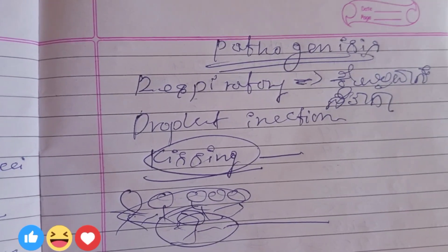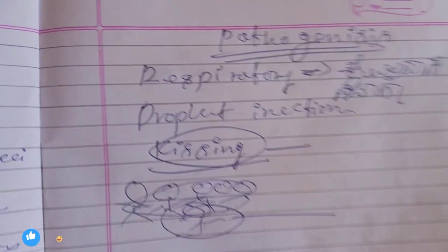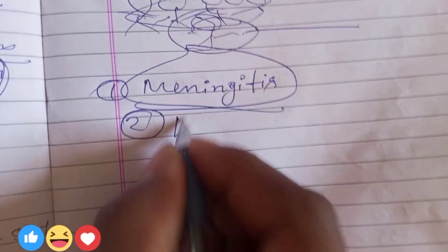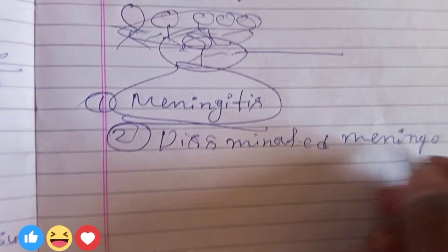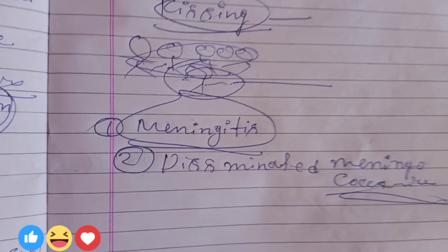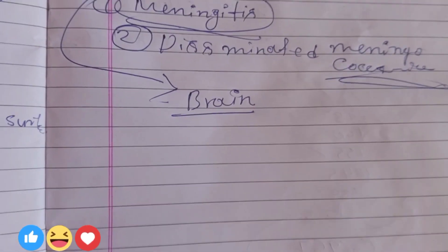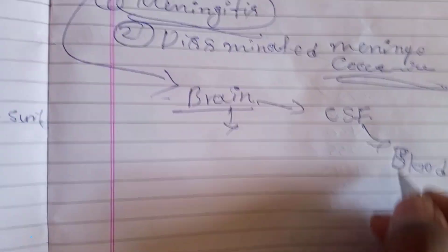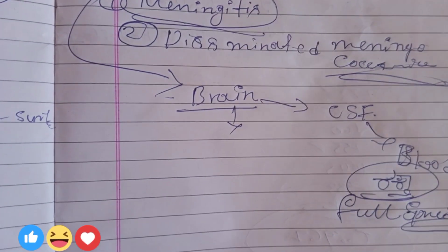These are the main diseases. Main mandatory diseases. Brain infection — meningitis. CSF. Blood. Full body — the blood.